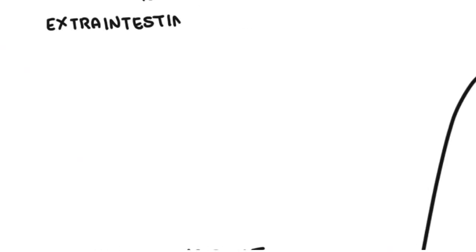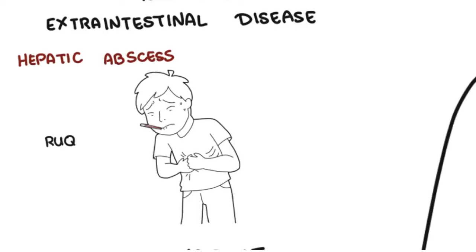For extra-intestinal disease, the symptoms depend on where the problem is. If it is a hepatic abscess, this will cause right upper quadrant pain, fever, and anorexia.